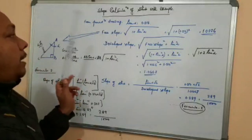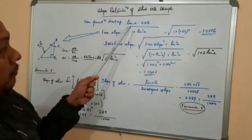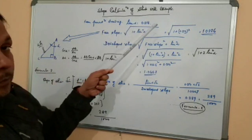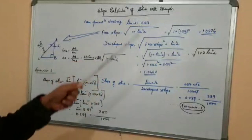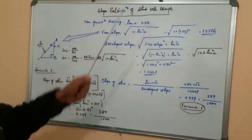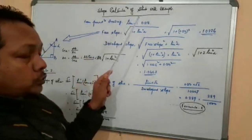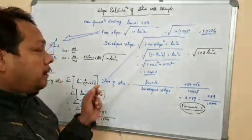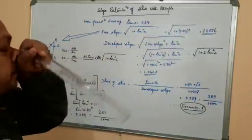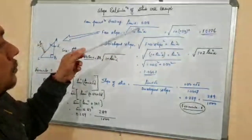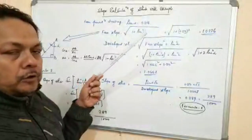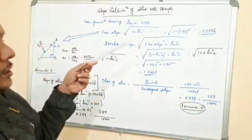In the earlier Hindi video, I used tan alpha — the tower slope — equal to 0.149. Now I am taking tan alpha equal to 0.214. For those who have already gone through the Hindi version, I request you to calculate along with me so that your understanding will be enriched.